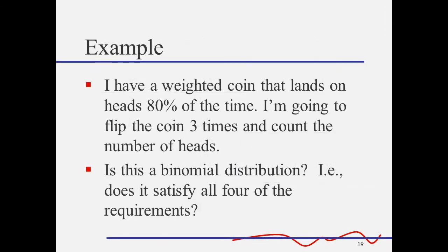Now let's suppose I have one of my brother's weighted coins, and this coin has a probability of 80% of landing on heads. I'm going to flip this coin three times and count the number of heads. Is this a binomial distribution? Yes, it is. We still have a fixed number of trials. We still have only two outcomes. The trials are still independent. And the probability doesn't change between trials. For all the trials, the probability of success is 0.8. So this is a binomial distribution.